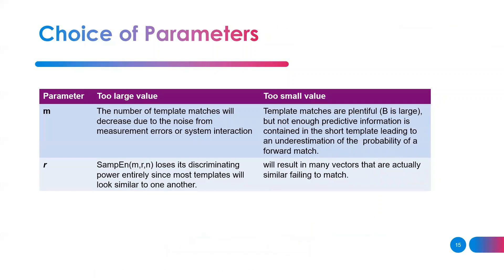For parameter selection: if M is too large, the number of template matches decreases due to noise from measurement errors. If M is too small, template matches are plentiful but the short template contains insufficient predictive information, leading to underestimation. For R: if too large, sample entropy loses discriminating power; if too small, many vectors that are actually similar fail to match.